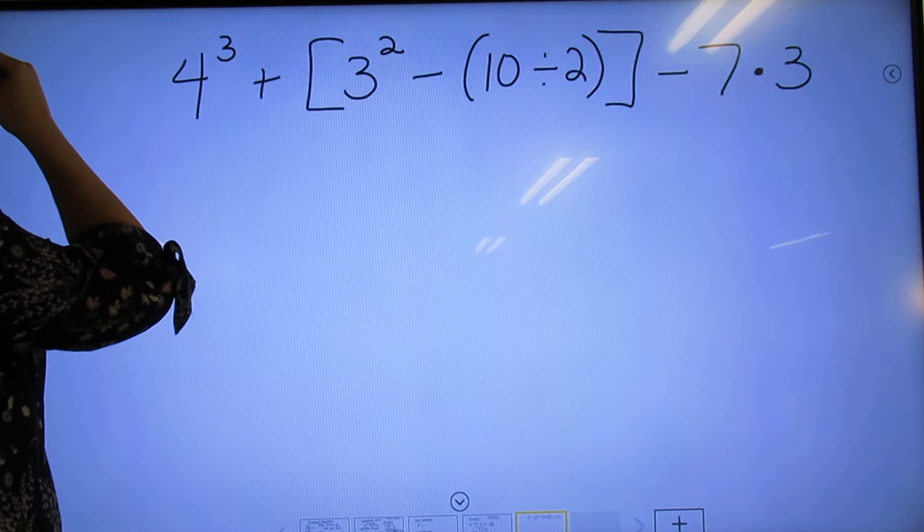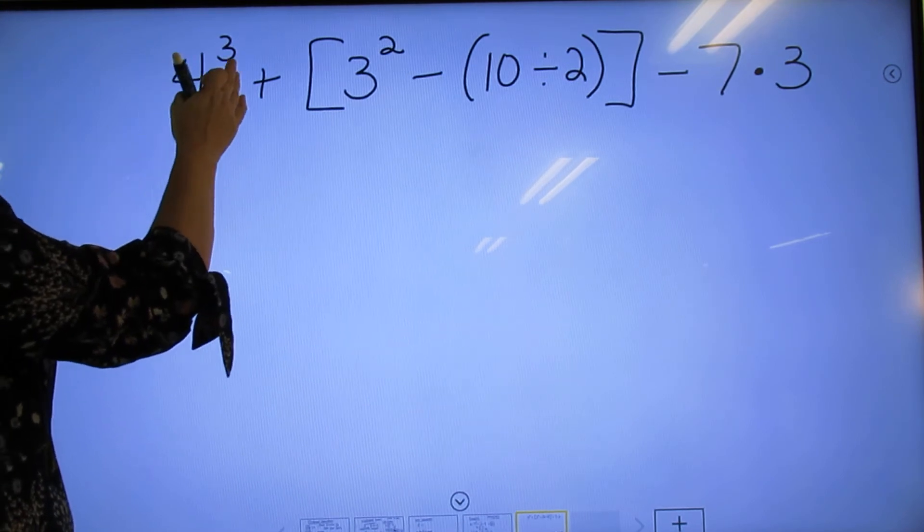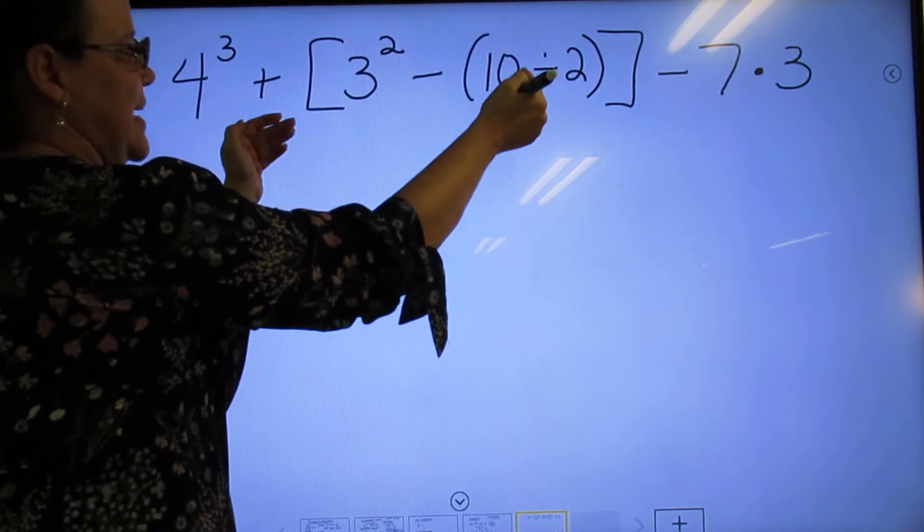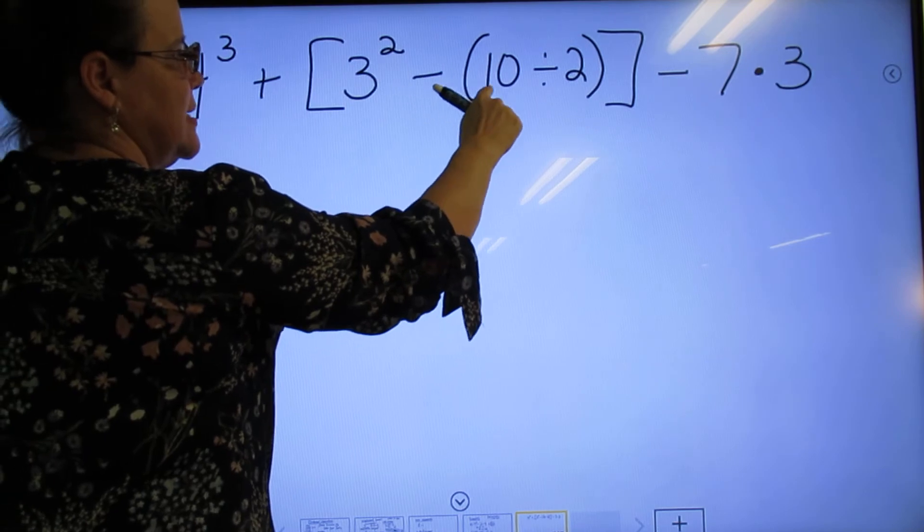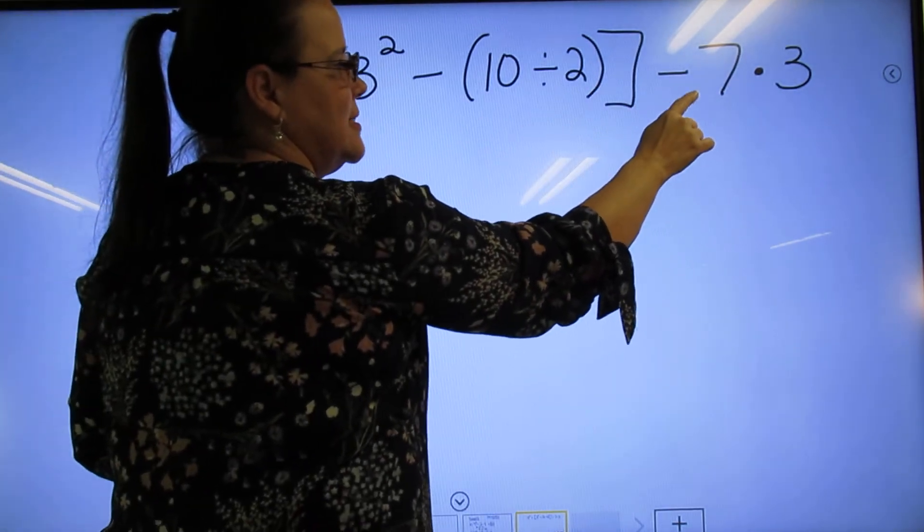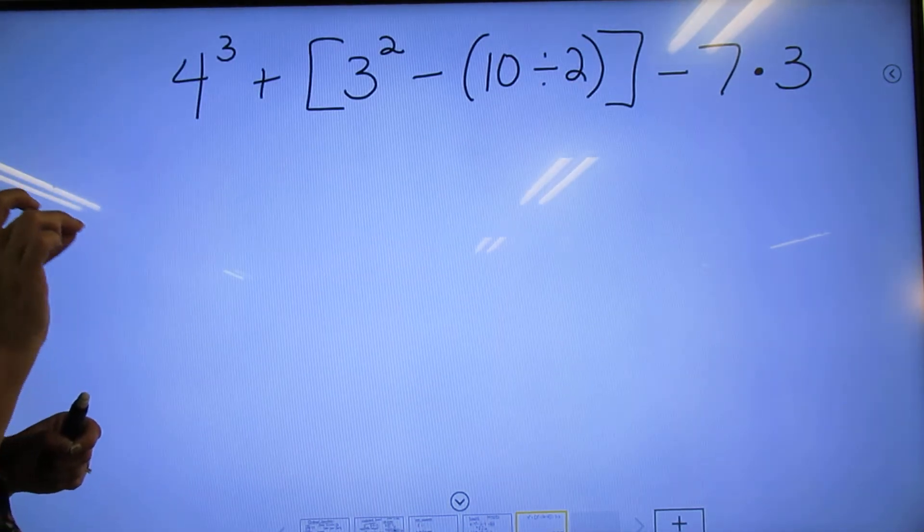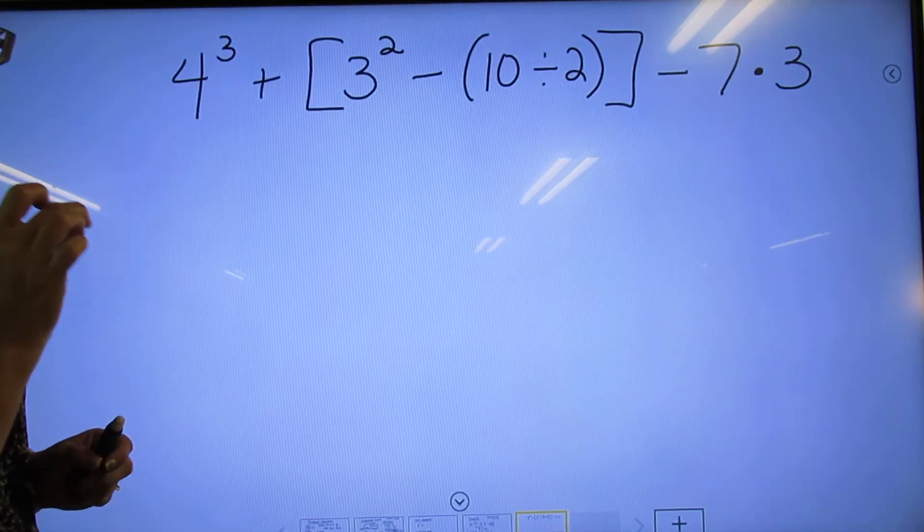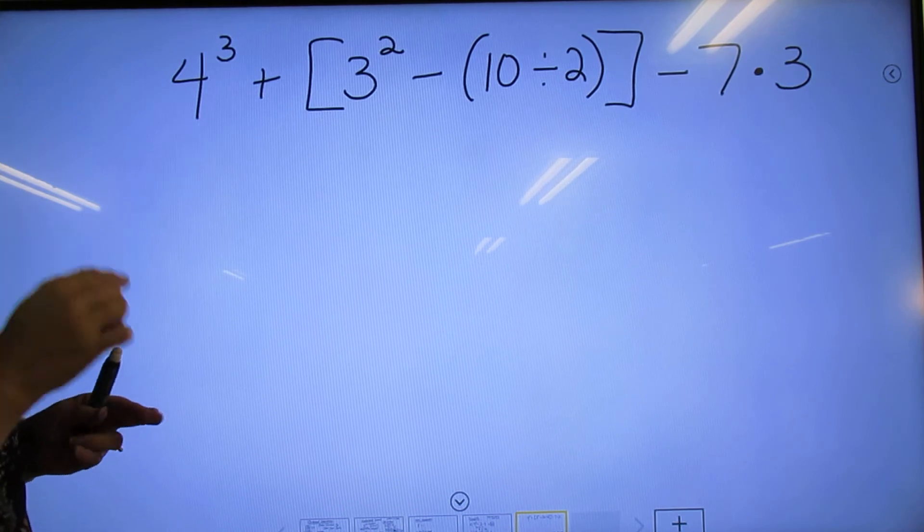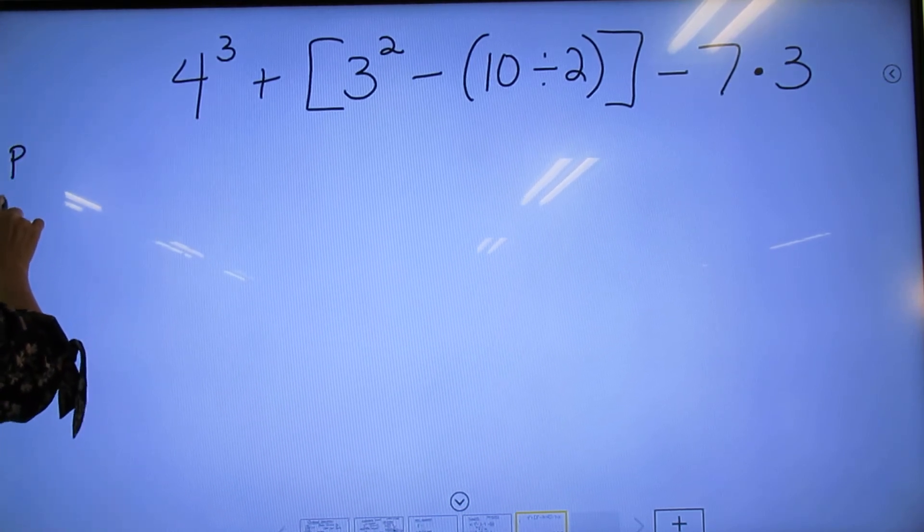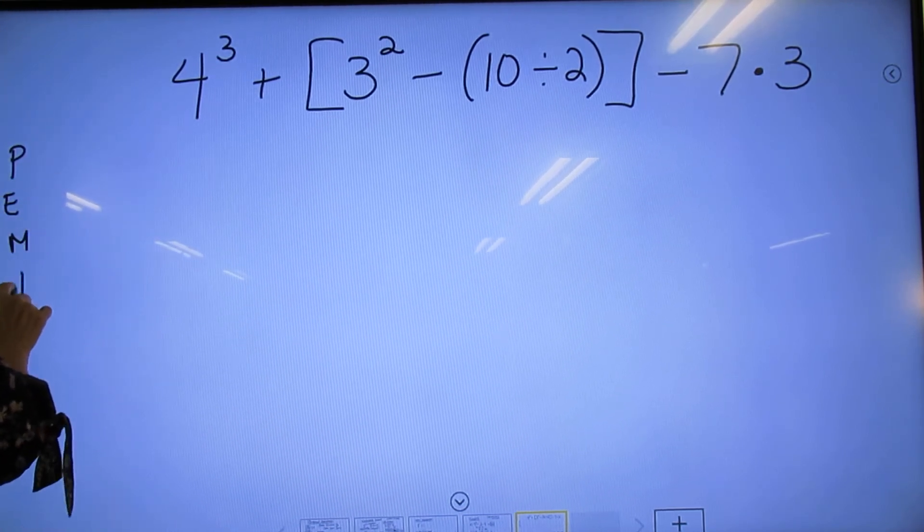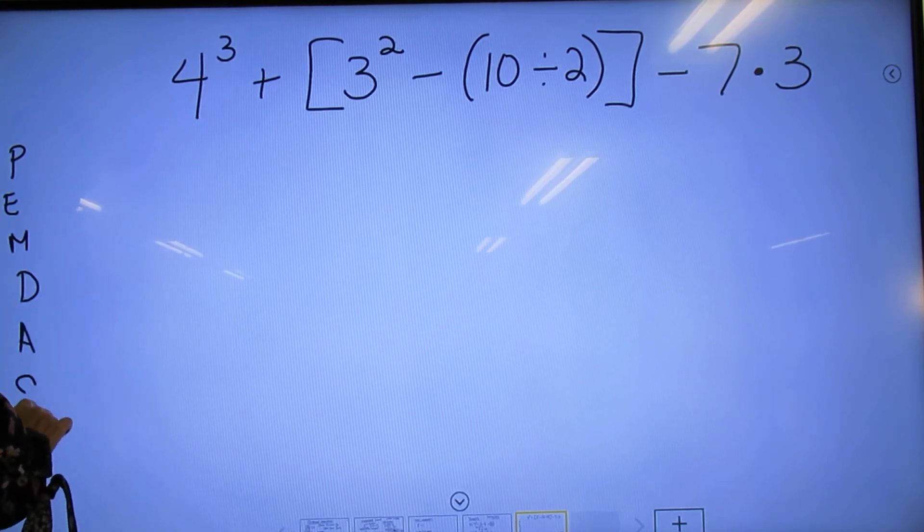So, 4³ plus brackets: 3²-(10÷2), and then -7×3. A lot of little things happen in there. Pay attention to detail. It's all in the details and understanding those. P-E-M-D-A-S. So first,